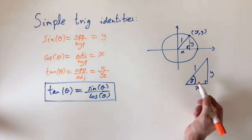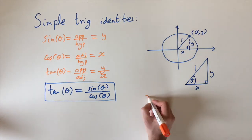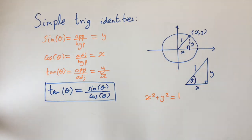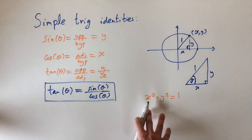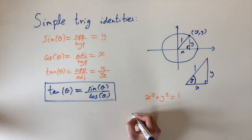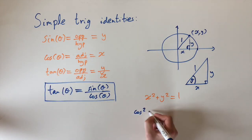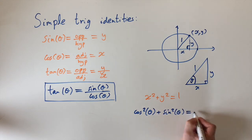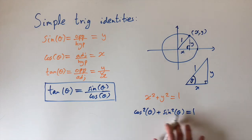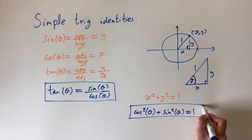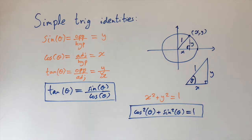Our second identity comes from applying Pythagoras's theorem to this right-angle triangle: x² + y² = 1² = 1. Just as before, we substitute x = cos θ and y = sin θ, which gives us cos²θ + sin²θ = 1. Again, this is an identity because it's true for all angles theta.